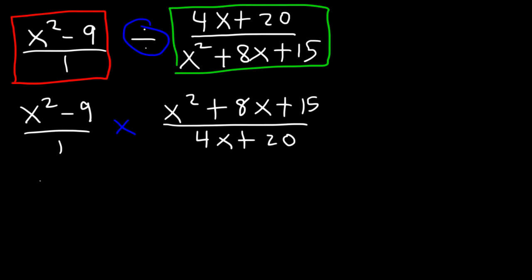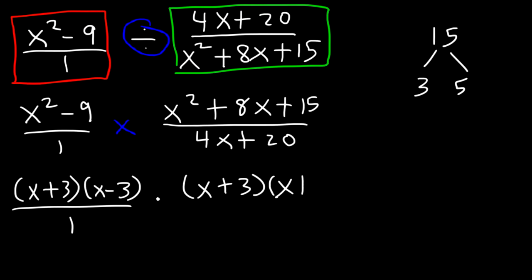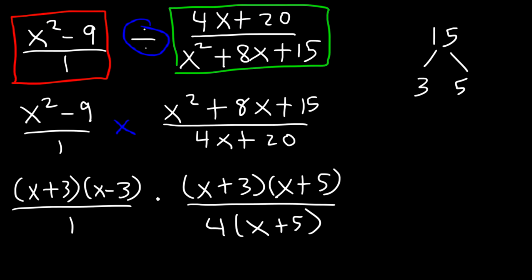x squared minus 9 factors as x plus 3 times x minus 3. For x squared plus 8x plus 15, two numbers that multiply to 15 but add to 8 are 3 and 5, so it factors as x plus 3 times x plus 5. For 4x plus 20, we take out the GCF which is 4, leaving x plus 5.